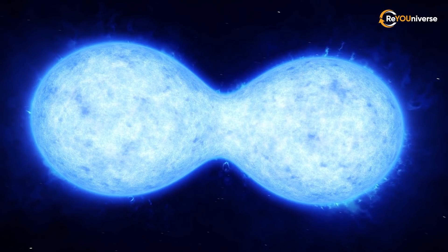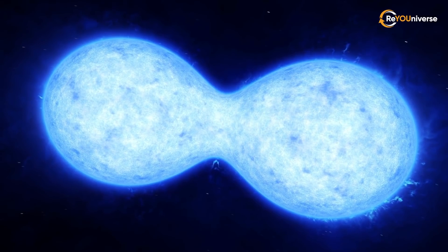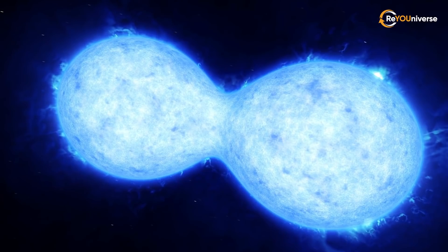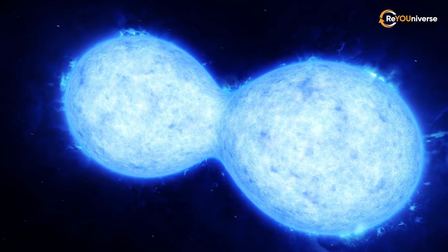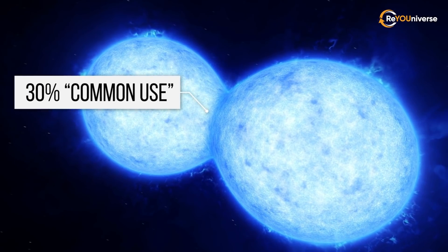Since the stars of VFTS-352 have approximately the same mass, instead of absorbing one another, they form a kind of bridge where they can exchange matter. Up to 30% of their matter is believed to be in a kind of common use.